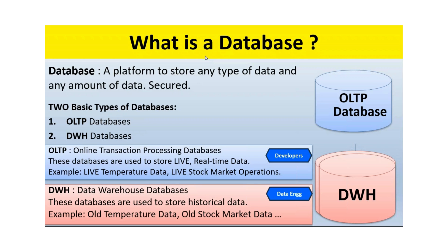There are two basic types of databases. The first is OLTP — Online Transaction Processing database. Developers are mainly involved in designing, storing, and managing these databases. The purpose of OLTP is to store live, real-time data — for example, a stock market operation, a live cricket match, or live online banking.